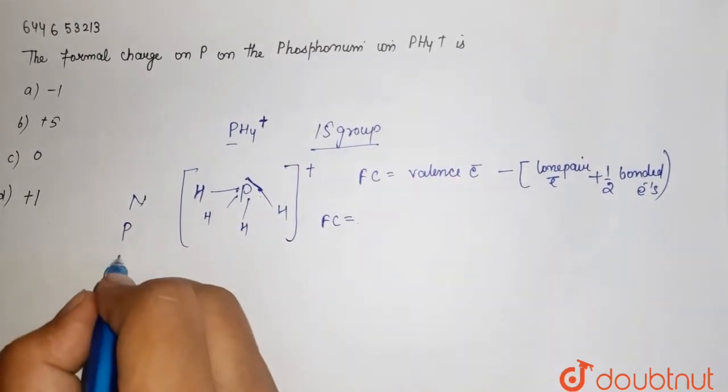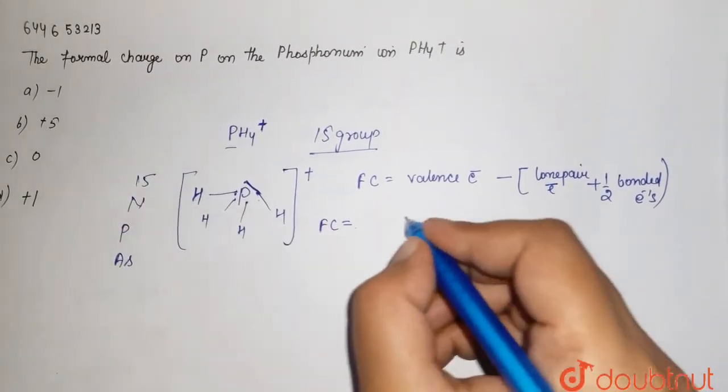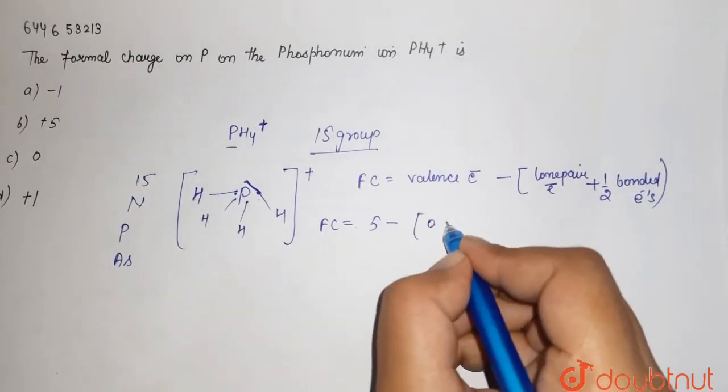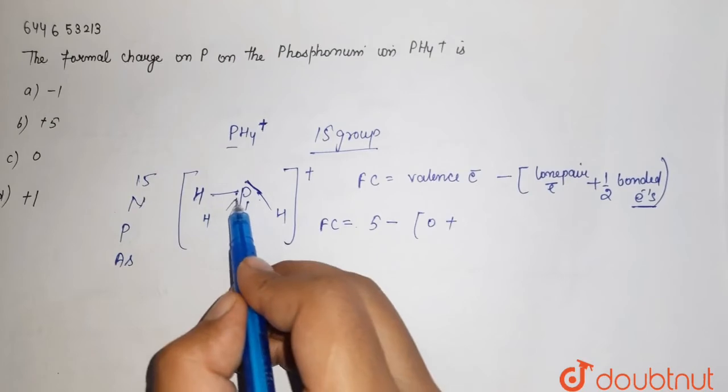...there is no lone pair, so it is 0, plus bonded electrons are there - so it is 1, 2, 3, 4, 5, 6, 7, 8 - so it is 8 upon 2.